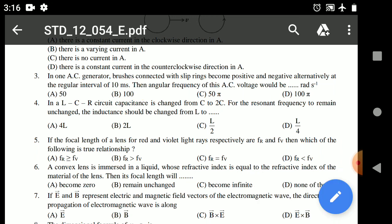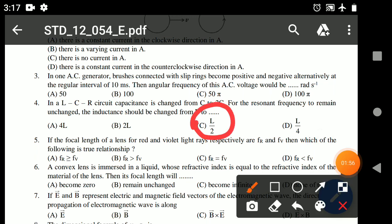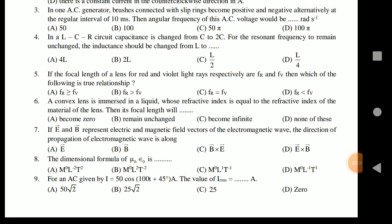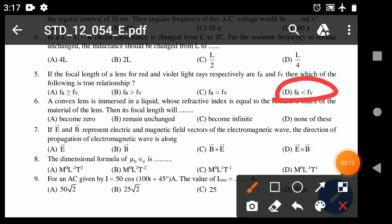Question number four is about LCR circuit. The answer is option C, L upon 2. Question 5: If the focal length of a lens for red and violet light rays respectively are fr and fv, then which of the following is true relationship? Answer is option D.